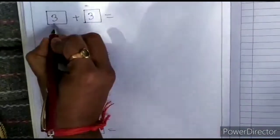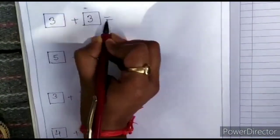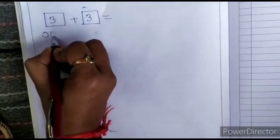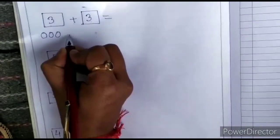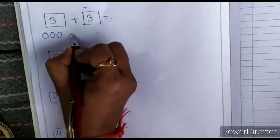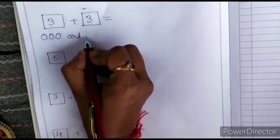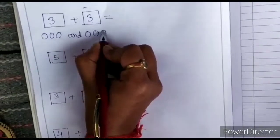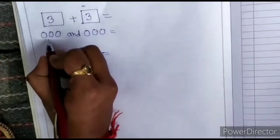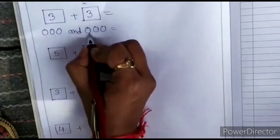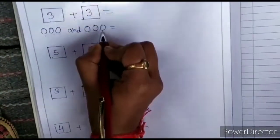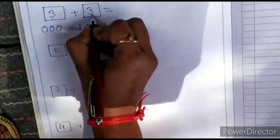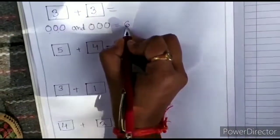3 plus 3. So, 3 marble here and second side 3 marble. 1, 2, 3. Let's count. 1, 2, 3, 4, 5, 6. 3 plus 3 is equals to 6.